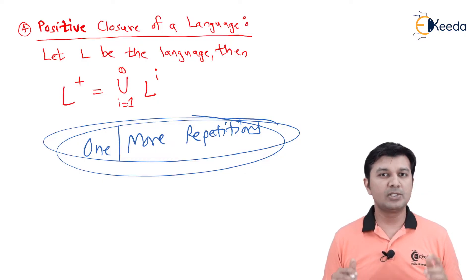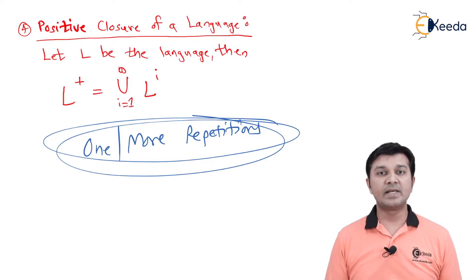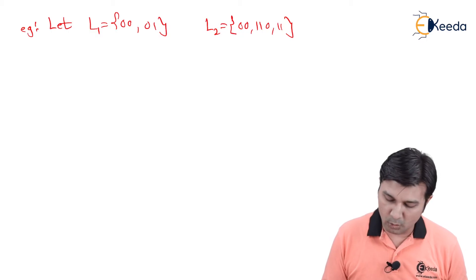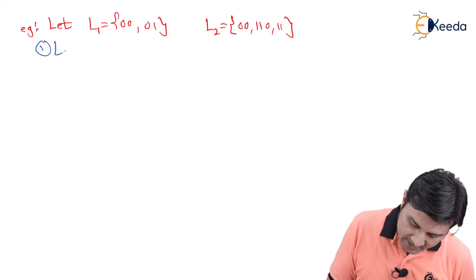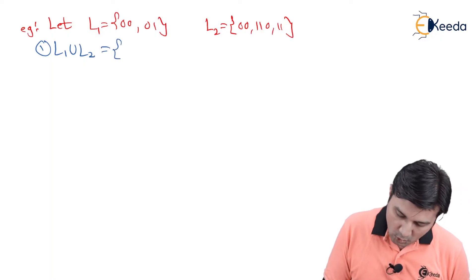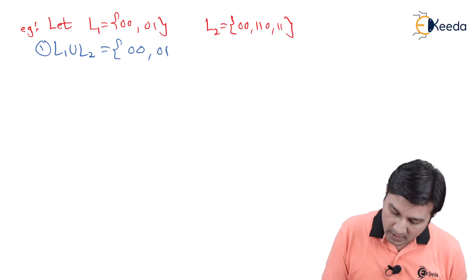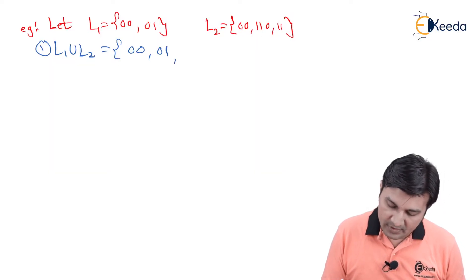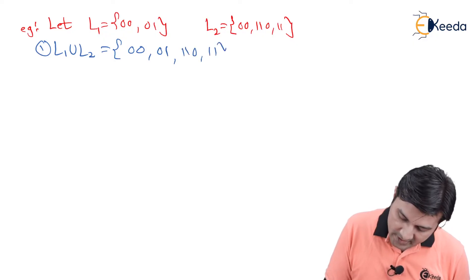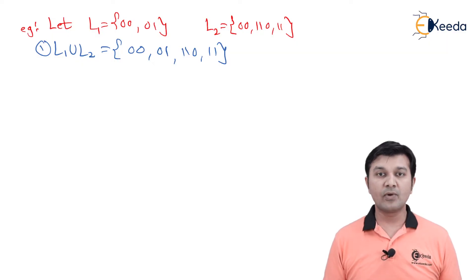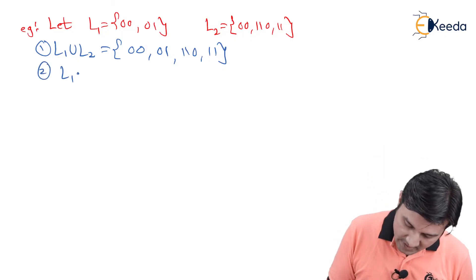Let's look at a small example. We have L1 = {00, 01} and L2 = {00, 110, 11}. For L1 union L2, it is merely joining L1 and L2. L1 contributes 00 and 01. From L2, 00 is already present so we ignore it, and we take 110 and 11. Therefore, L1 union L2 = {00, 01, 110, 11}. This confirms that in union we don't look for combinations.